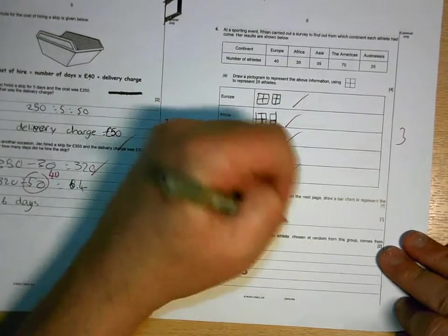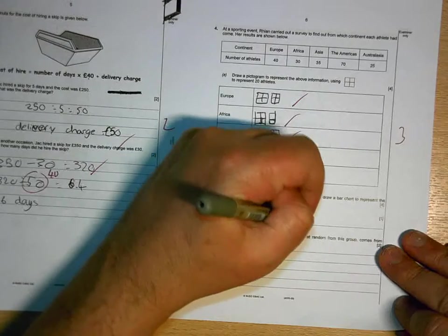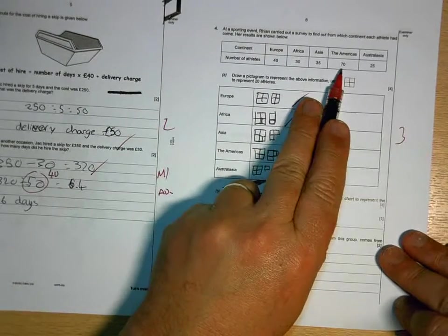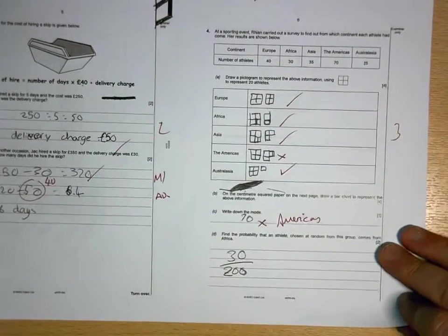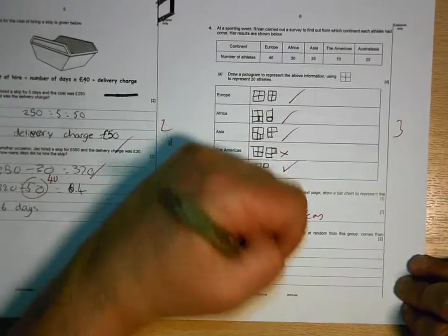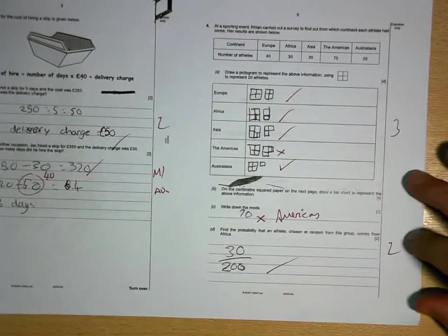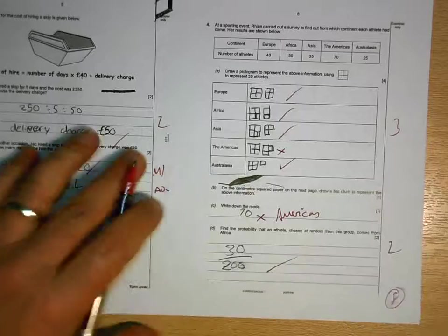70 is not the mode. Americas is the mode. 70 tells you which data to write them is the mode. Got that one right though. 5, 8 for the page.